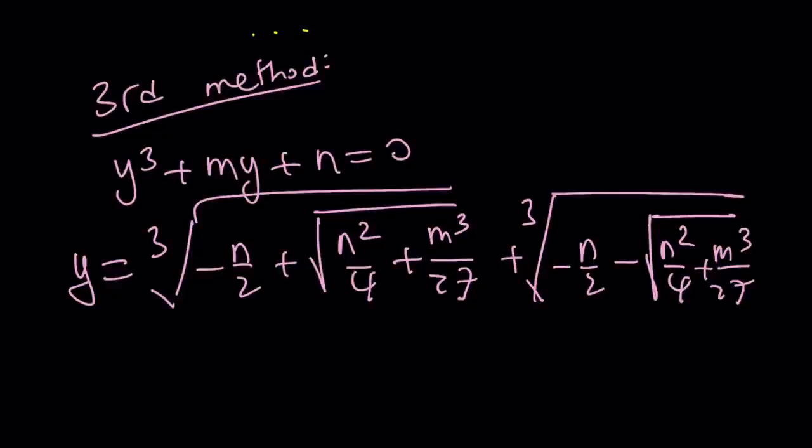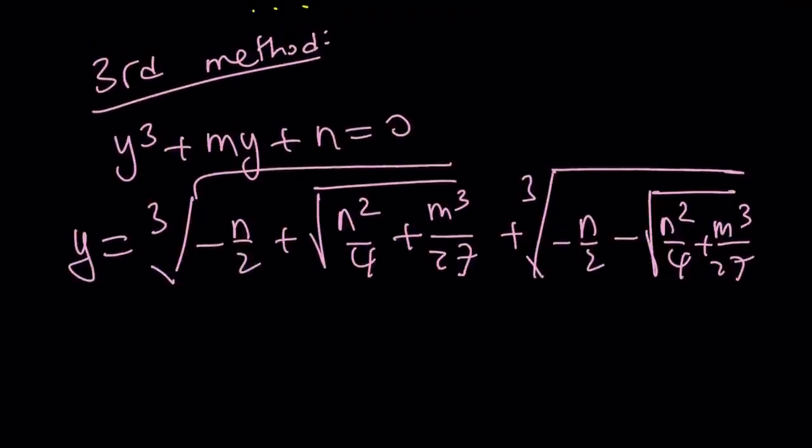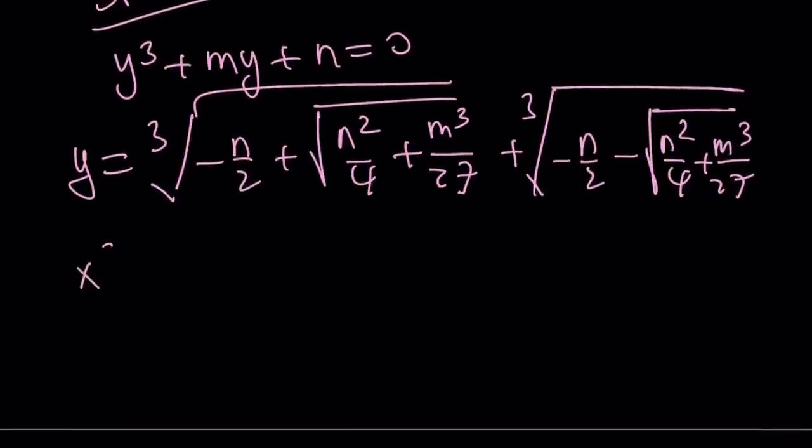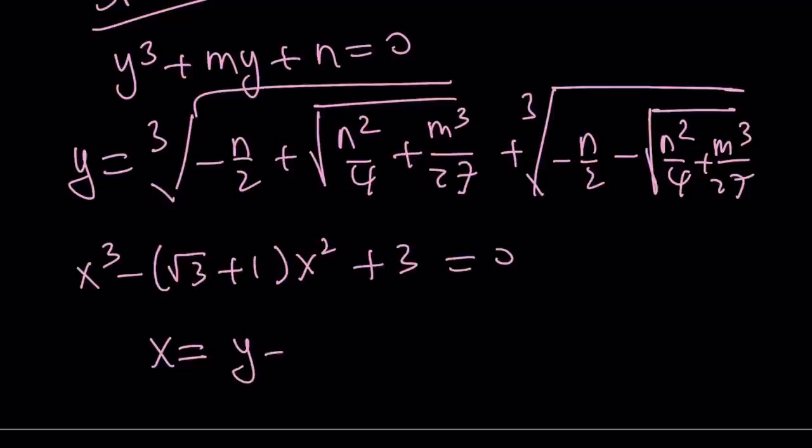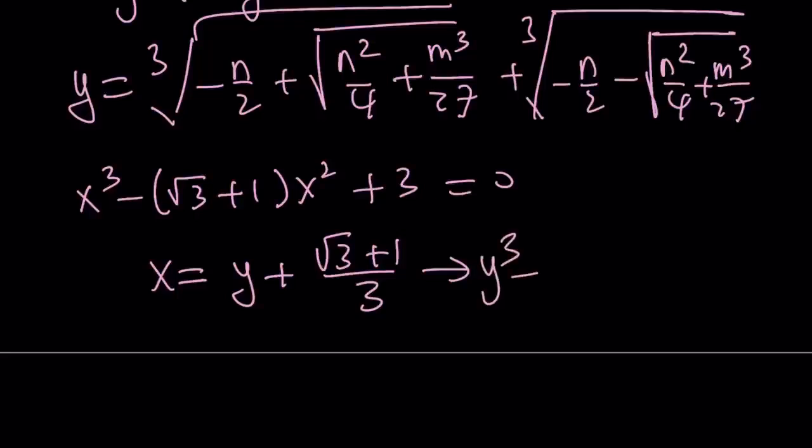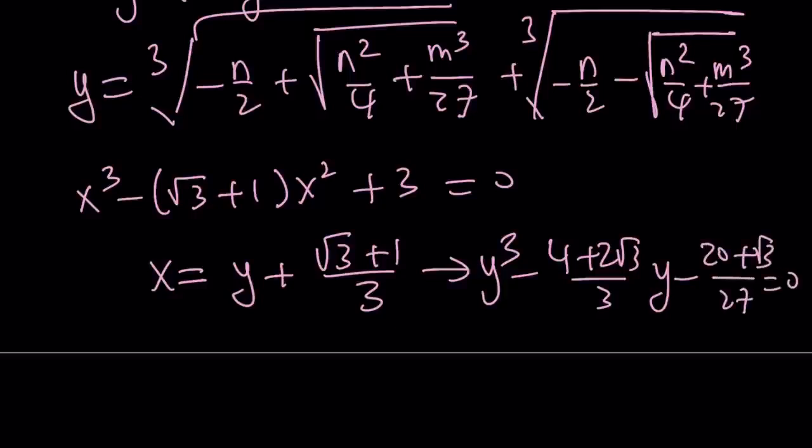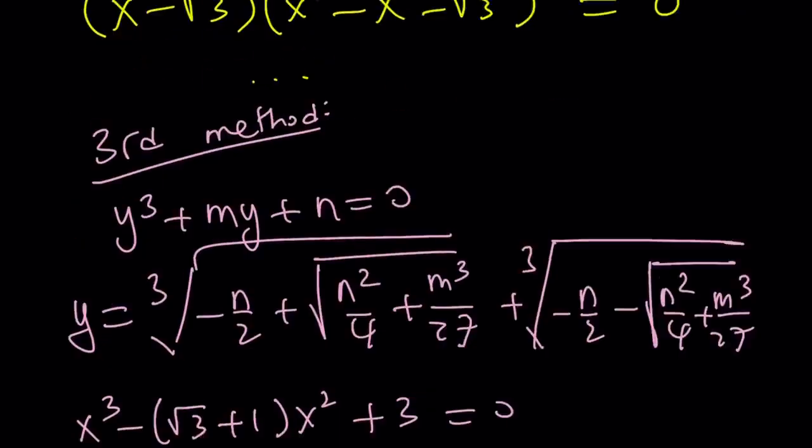Basically, if you can turn your equation into this and you can find the solutions, I shouldn't say very easily, but you can definitely find that. Now, our equation has an x squared term, so we kind of need to do a little bit of manipulation here to get rid of the x squared. And that's done by, let me just tell you that, you can replace x with something like y plus root 3 plus 1 over 3. And this is going to turn your equation into y cubed minus, if I'm not mistaken, 4 plus 2 root 3 over 3y minus 20 plus root 3 over 27 equals 0. And from here, you can basically solve it using the formula.